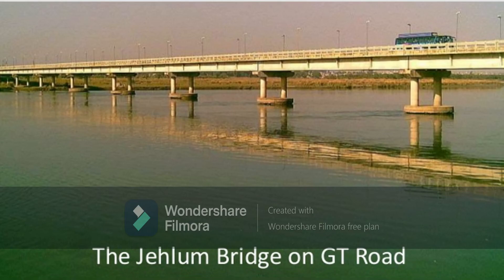The bridge at Jalalabad lies at a background of GT Road. It is more than 150 years old. This bridge connects Lahore to Jalalabad and is a shortcut between the two cities. The bridge was composed of iron trusses over many concrete piers. It has a single railway track on one side and the GT Road on the other side of the track.